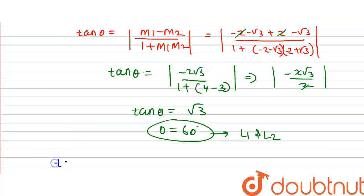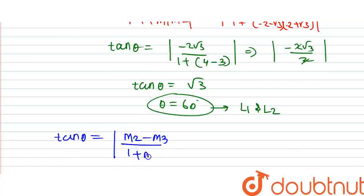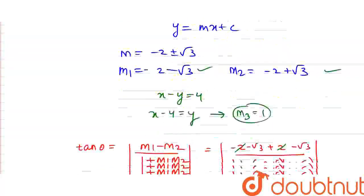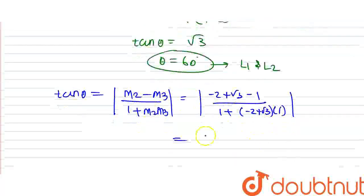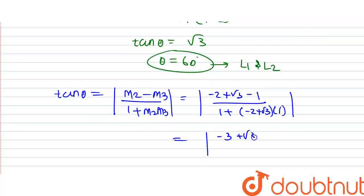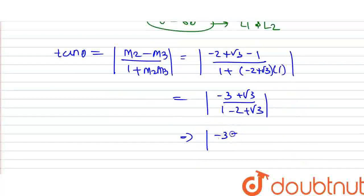Now for lines 2 and 3, tan theta equals (m2 minus m3) divided by (1 plus m2 times m3). Here m2 equals minus 2 plus root 3, and m3 equals 1. So the numerator is minus 2 plus root 3 minus 1 equals minus 3 plus root 3, and the denominator is 1 plus (minus 2 plus root 3) times 1 equals minus 1 plus root 3, which equals root 3 minus 1.